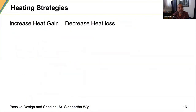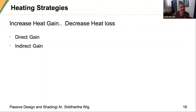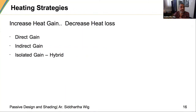For heating strategies, the idea is to increase heat gain and decrease heat loss. This can be done by direct gain — sun directly entering the building; indirect gain — where a wall gets hot and heat transfers into the building; or isolated gain, which has a lot of potential we often miss. You can gain heat from a different part of the site that is exposed to sun, especially for cold or cloudy climates.